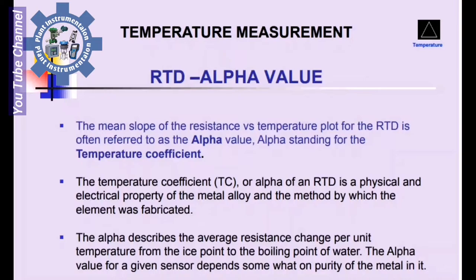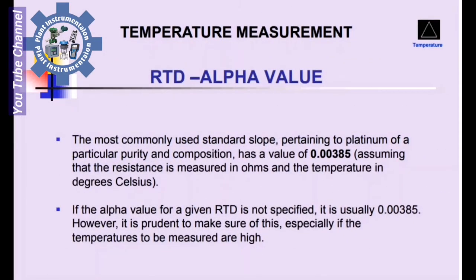The alpha describes the average resistance change per unit temperature from the ice point to the boiling point of water. The alpha value for a given sensor depends somewhat on the purity of the material. The most commonly used standard slope for Platinum has a value of 0.00385, assuming resistance is measured in ohms and temperature in degrees Celsius.